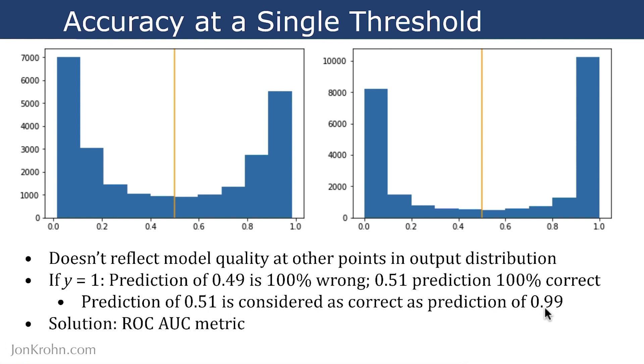The solution to this single threshold issue is to use another metric called the area under the curve of the receiver operating characteristic. And over the next couple of videos, I'll explain exactly how we calculate this. Cool. Up next is a video on the confusion matrix, something that is an essential stepping stone to understanding the ROC AUC metric.